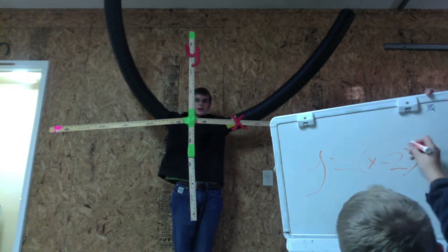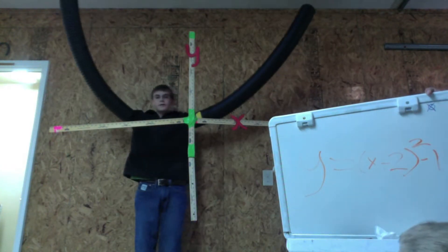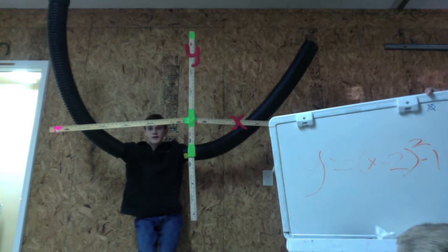y equals x minus 2 squared, minus 1. It is moved 2 units to the left and down 1.